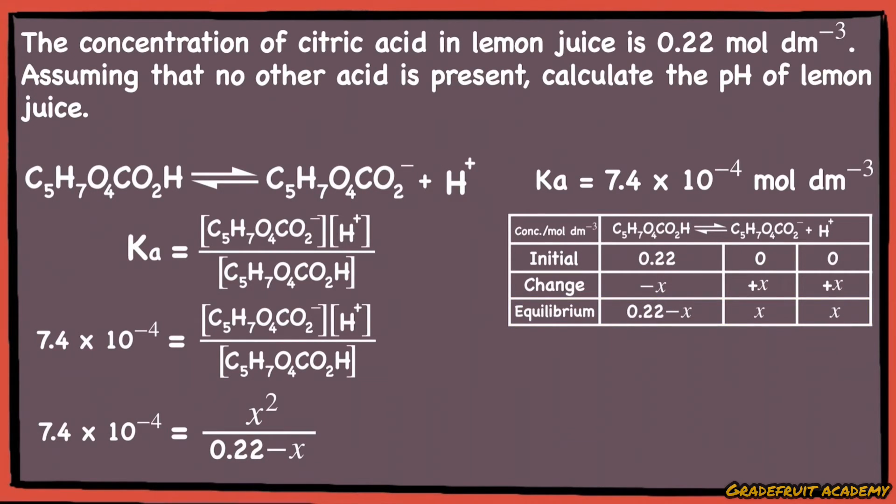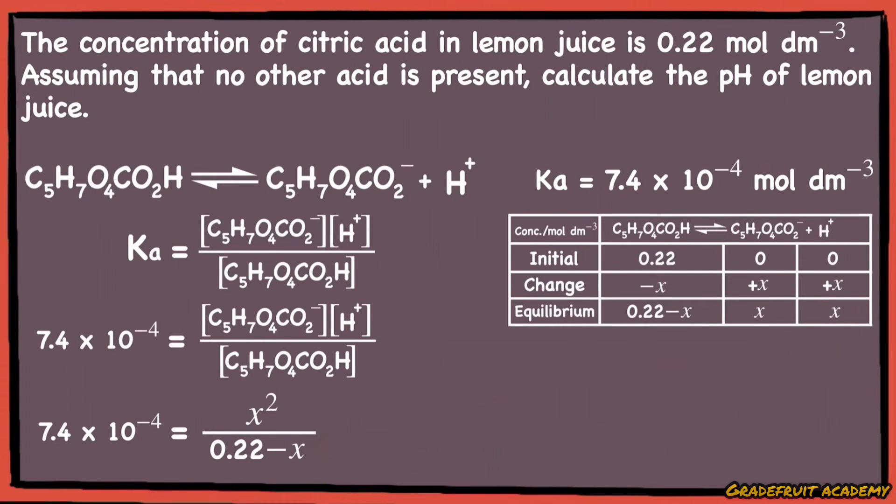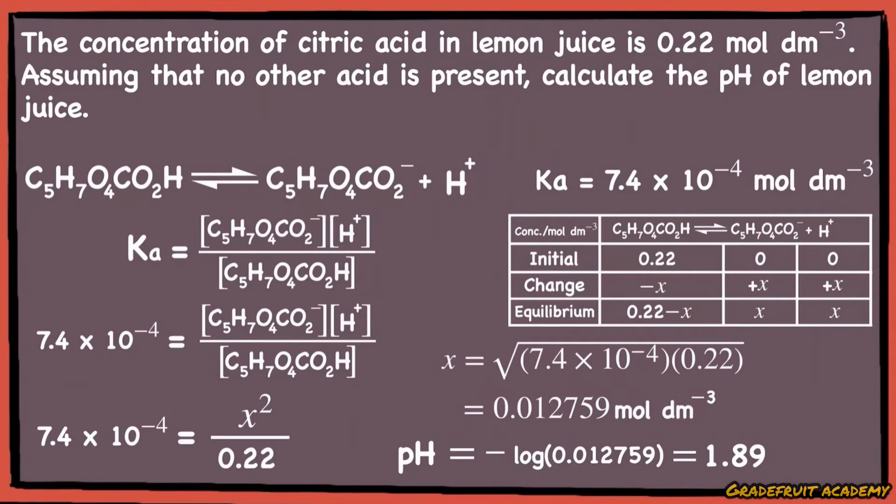What's left to do is find x. But before that, since citric acid is a weak acid, we can assume that x is so small and insignificant compared to 0.22 that we can rewrite the denominator of 0.22 minus x to be effectively just 0.22. Hence x will equal 0.012759 mol per dm³ rounded to five significant figures. Lastly, the pH of citric acid will be negative log the concentration of hydrogen ions, which gives 1.89 rounded to three significant figures.